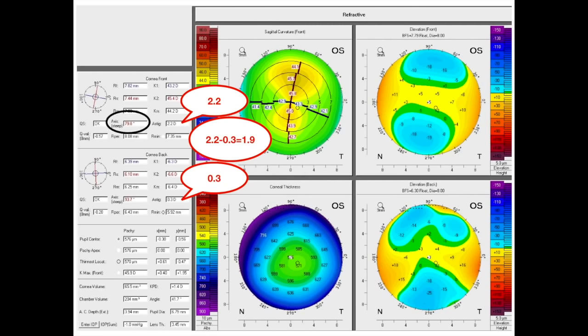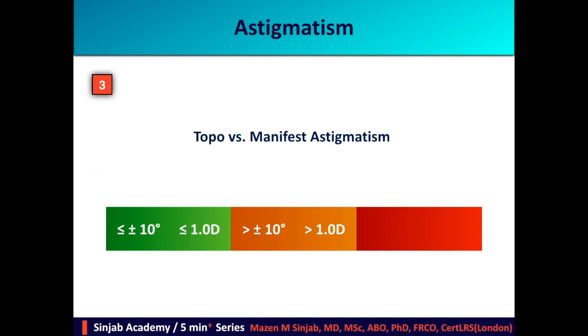We have to pay attention to the color of the displaced axis on the anterior corneal surface. In this example, it is in red, which means the steep axis. However, we have to calculate the flat axis — in this case it is 170 — because in the minus cylinder equation, the cylinder is oriented on the flat axis. We then compare the topographical astigmatism with the subjective astigmatism. Whenever there is a difference in magnitude of more than one diopter, or in axis of more than 10 degrees, it is considered a moderate risk factor.